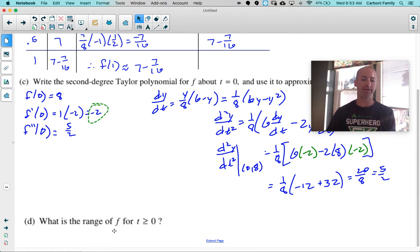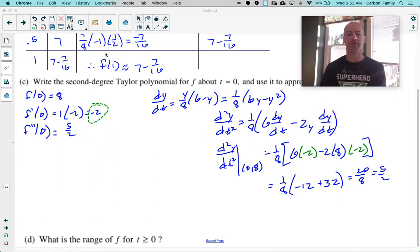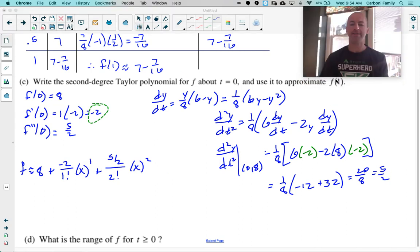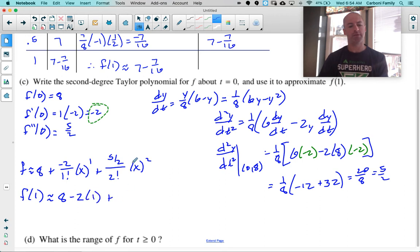Now that I have those three values, I can very quickly spit out my second degree Taylor polynomial. Move my head out a little here. And so my second degree Taylor polynomial for F, so F would be approximately F of zero plus F prime of zero over one factorial times X minus zero to the first plus F double prime of zero. And then it says use that to approximate F of one. So F of one is going to be approximately eight minus two times one plus, and that will be five fourths times one squared. And I would stop there and I'll leave that for the graders to grade.